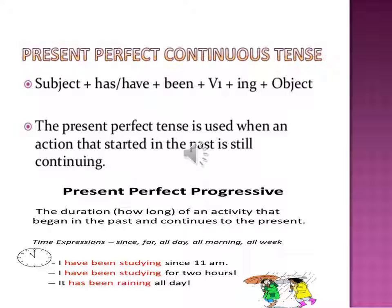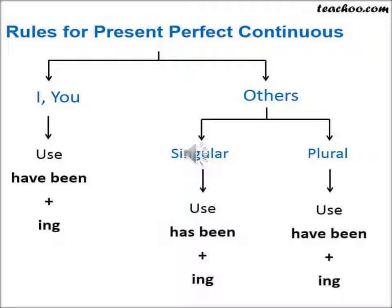So overall, the rule is: subject plus has or have plus been plus first form of the verb plus -ing plus object. With the subjects I or you, we use 'have been' plus first form of the verb plus -ing. With singular subjects, we use 'has been' plus first form of the verb plus -ing. With plural subjects, we use 'have been' plus first form of the verb plus -ing.